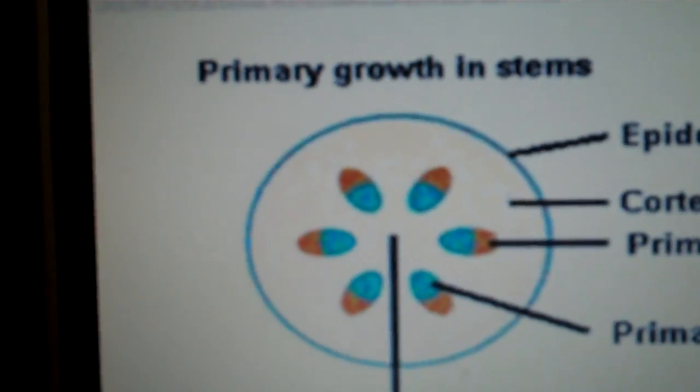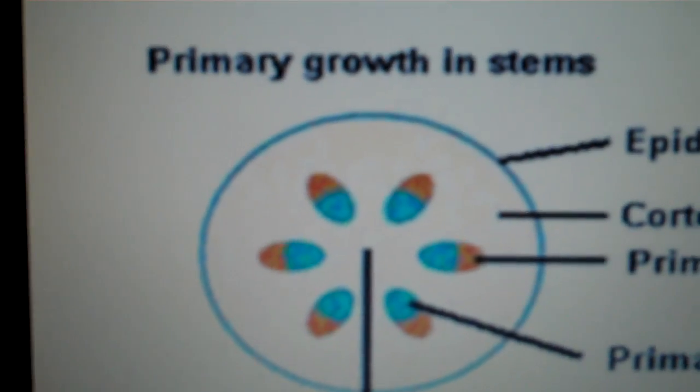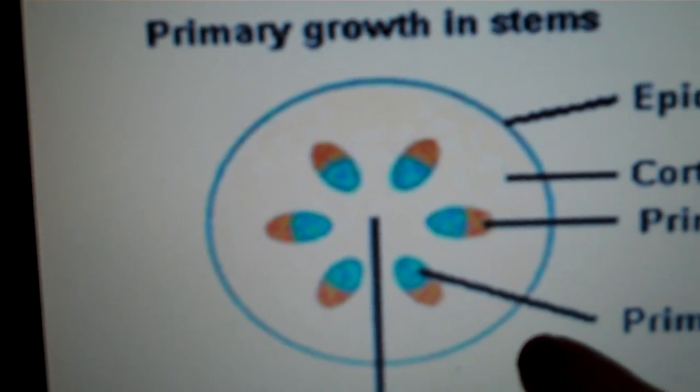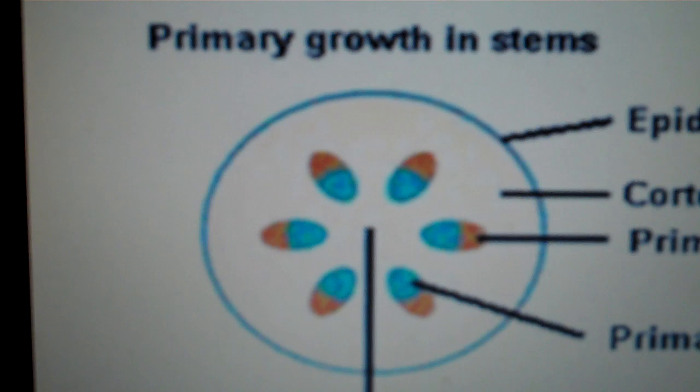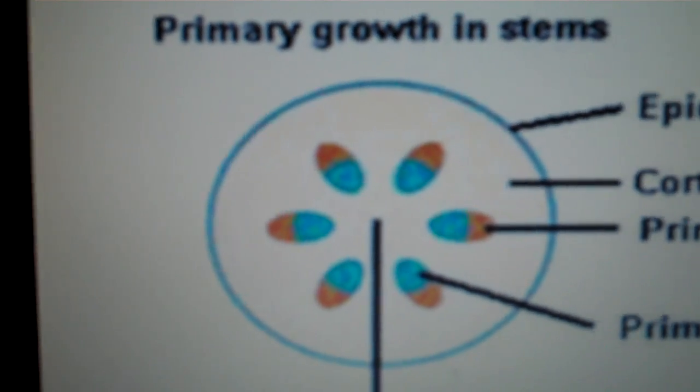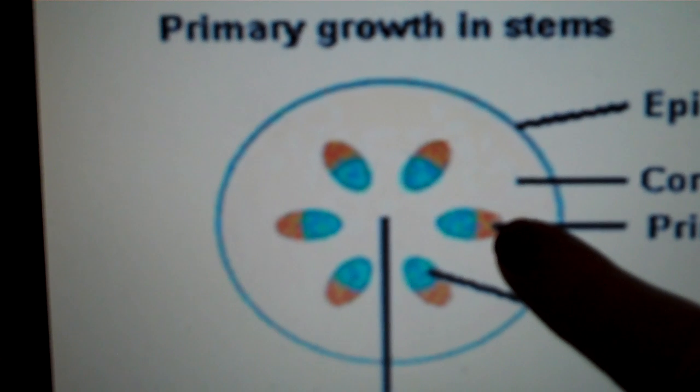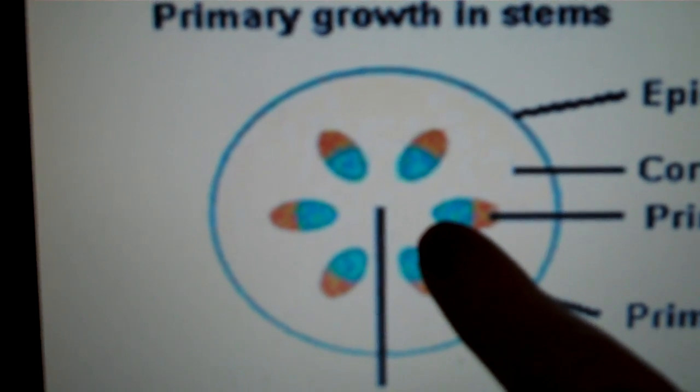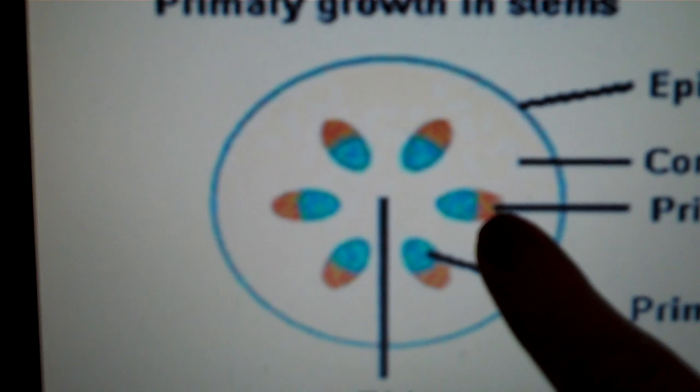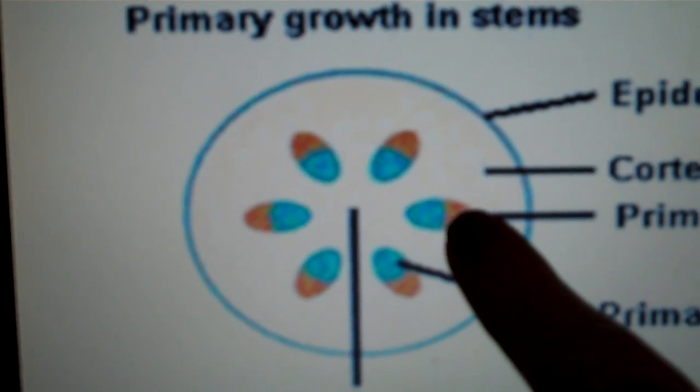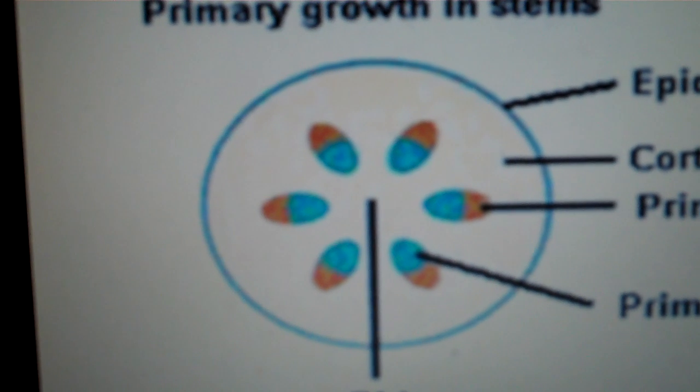Now dicot plants are going to be organized this way where we have the epidermis or the dermal tissue on the outside. Then we have the vascular tissue in vascular bundles. So on the outside we have the phloem located in brown and then we have the xylem in blue. Now that makes up one vascular bundle to transport water or nutrients for the plant. Then the area not located in the dermal tissue or the vascular tissue is the ground tissue.